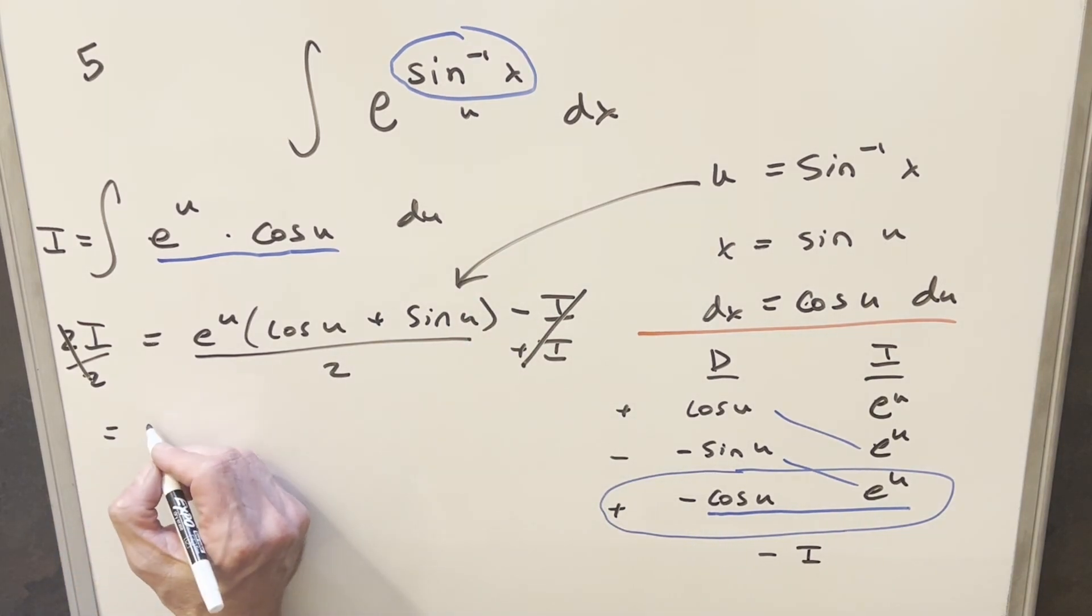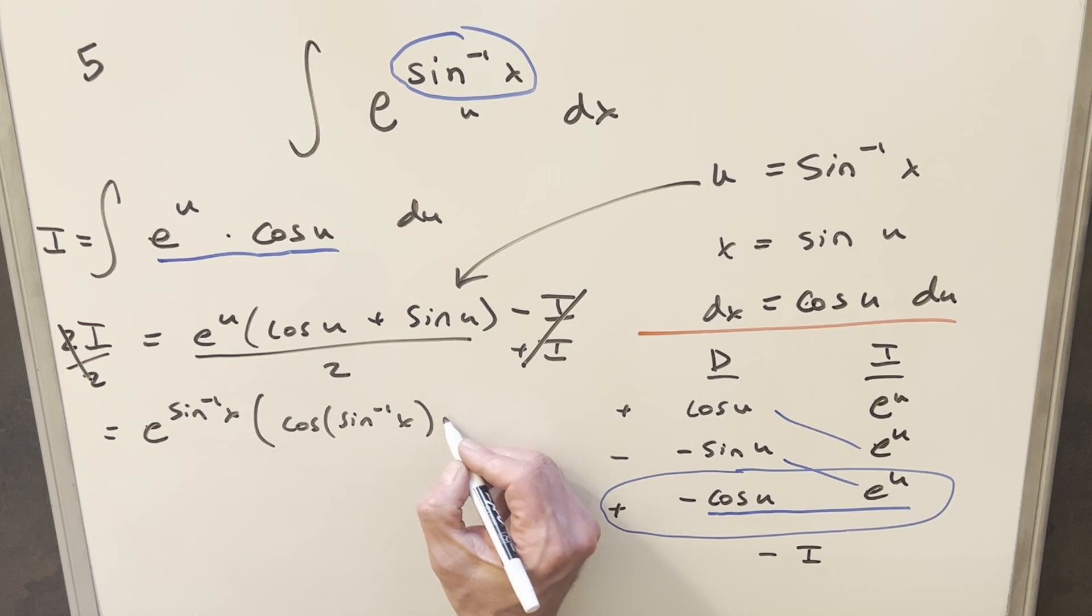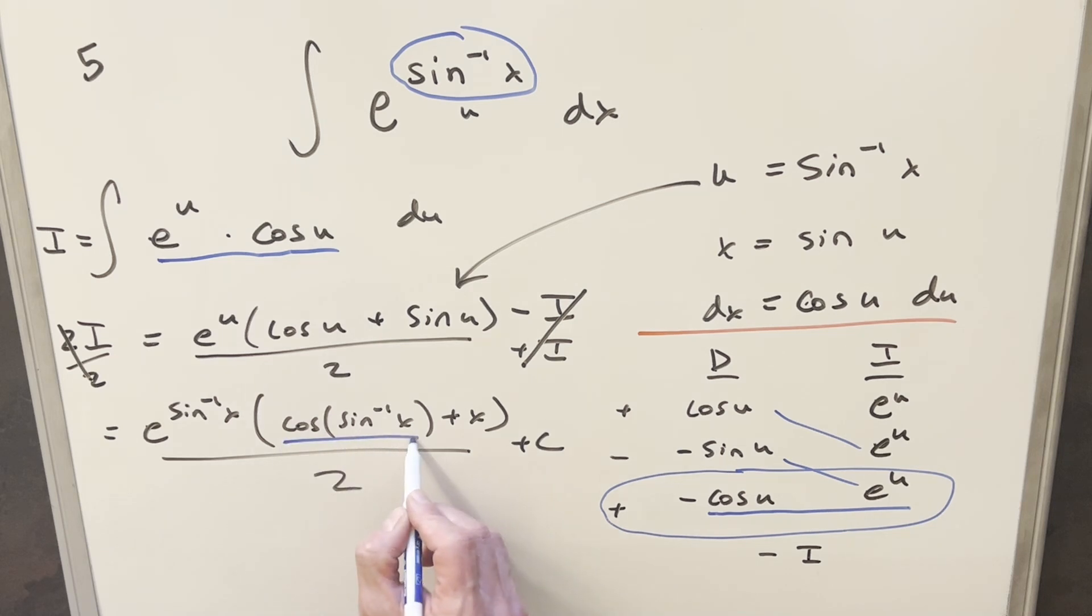So for the back substitution, we're going to end up with e to the arcsin of x. Then this is going to become cosine of arcsin of x. And then sine of arcsin of x, I'll just write as plus x. And we'll have this whole thing over 2. But one thing I can do before we finish up is I can actually write this in an alternate form, just rewriting this using the triangle. So let's just do that really quick, and then we'll finish it off.